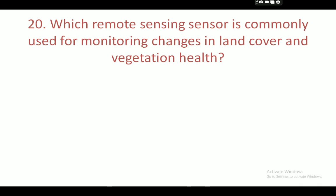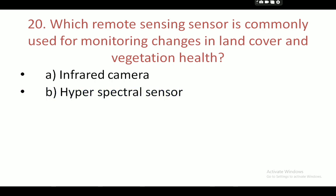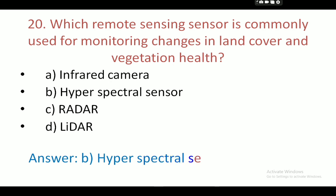Next question: which remote sensing sensor is commonly used for monitoring change in land cover and vegetation health? Your options are: infrared camera, hyperspectral sensor, radar, and LiDAR. Your correct answer is B — hyperspectral sensor.